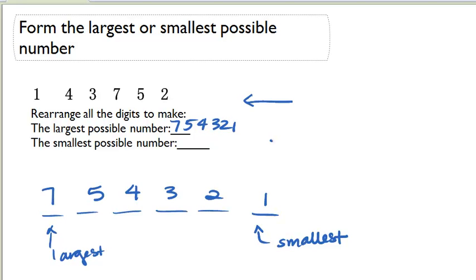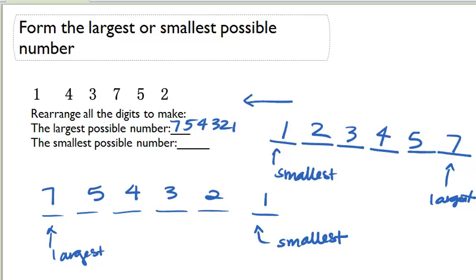Our smallest possible number, we're going to do something similar. But instead of the smallest being on the right, the smallest digit is now on the left, with the largest digit being on the right. So our smallest is one, then two, then three, then four, then five, then seven.